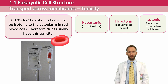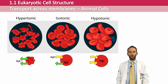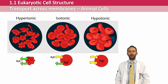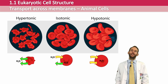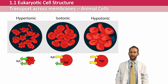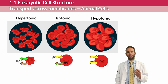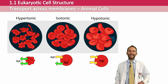If animal cells are placed in a hypotonic solution, water will move into them and they will burst — what we call lysis. If they're placed in a hypertonic solution, then water will move out of them and they become more shrivelled and crinkled into what we call crenated cells.